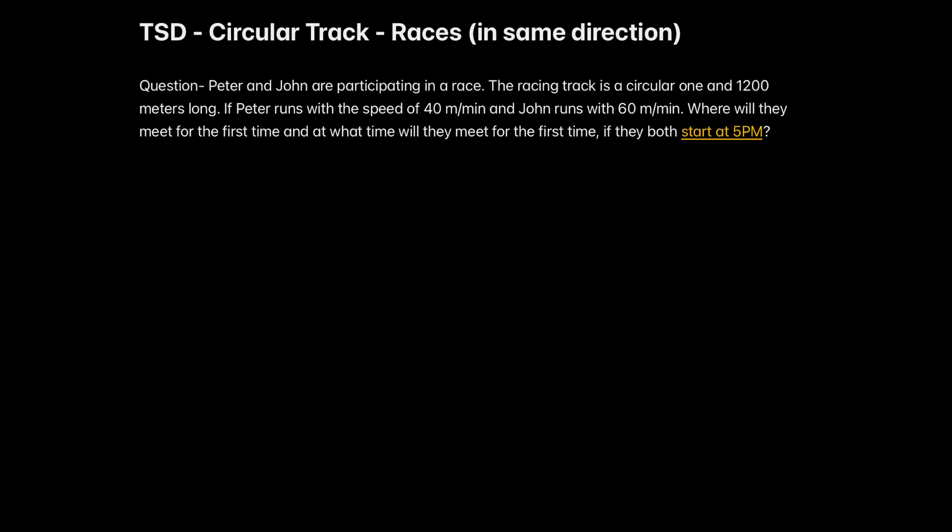The question says that Peter and John are participating in a race. Now when I say a race they will not specify that they are running in the same direction or in the opposite direction because we all know that when two people are running in a race they are actually following the same direction. So the racing track is a circular one and 1200 meters long.